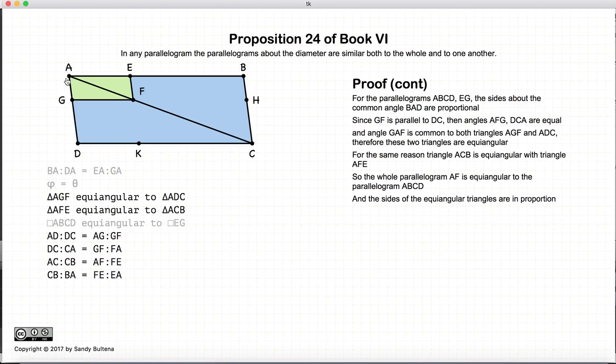So just throwing them all together. AC to DC is equal to AD to DC is equal to AG to GF. DC to CA is equal to GF to FA. AC to CB is equal to AF to FE. And CB to BA is equal to FE to EA. So this all just comes about because these triangles are all equal angular.